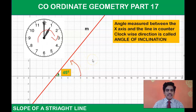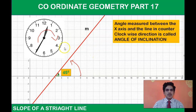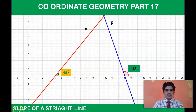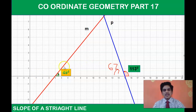This 45 degrees is called the angle of inclination of straight line M. So the angle made by a straight line with the x-axis in the counter-clockwise direction is called the angle of inclination. Now here I have another straight line P, and the angle of inclination of this straight line is 113 degrees. As a matter of interest — how much is the supplementary angle here? Since 113 degrees forms a linear pair with 180, this angle is 67 degrees.